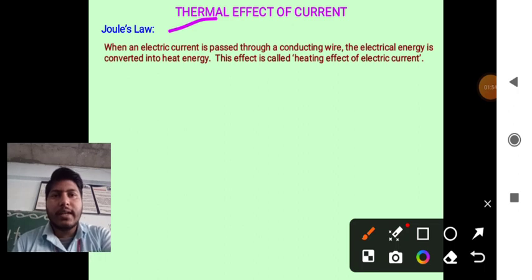What is Joule's Law? When an electric current is passed through a conducting wire, the electrical energy is converted into heat energy.